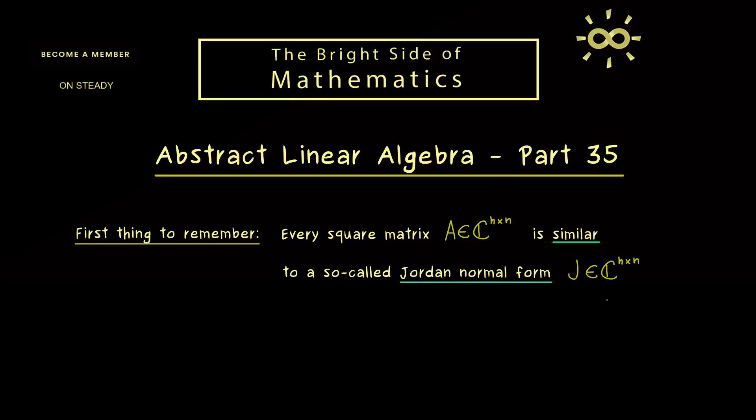Now we will explain how this matrix J looks like, but for the moment you can remember it is a triangular matrix with some special properties. Indeed, one important thing is that the eigenvalues of our matrix A are on the diagonal of J.